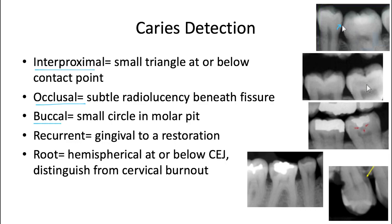For a buccal or lingual pit caries, these are going to be circular with sharper borders, and located at the level of a buccal or lingual pit in a molar. Like occlusal caries, they're going to be much easier to see clinically — it's much more clear that you have caries during visual inspection than if you simply rely on the x-ray alone.